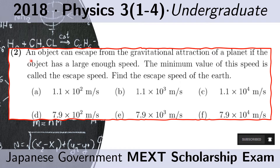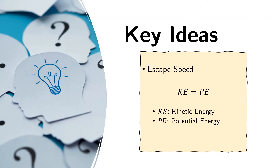Question 2. An object can escape from the gravitational attraction of a planet if the object has a large enough speed. The minimum value of this speed is called the escape speed. Find the escape speed of the Earth. The escape speed is the speed at which the kinetic energy of the object equals its gravitational potential energy. The kinetic energy is related to its speed, and the potential energy is its gravitational potential energy.